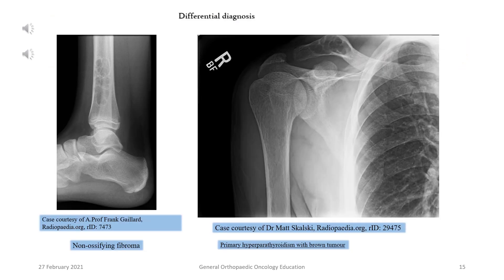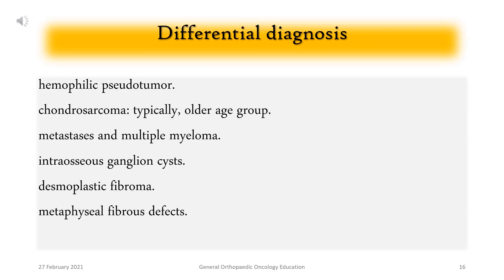Additional differential considerations: carefully examine the sample radiographs. An ankle radiograph shows an example of non-ossifying fibroma. A shoulder radiograph shows an example of primary hyperparathyroidism with brown tumor. Further differentials include hemophilic pseudotumor, metastases and multiple myeloma, intraosseous ganglion cysts, desmoplastic fibroma, and metaphyseal fibrous defects.